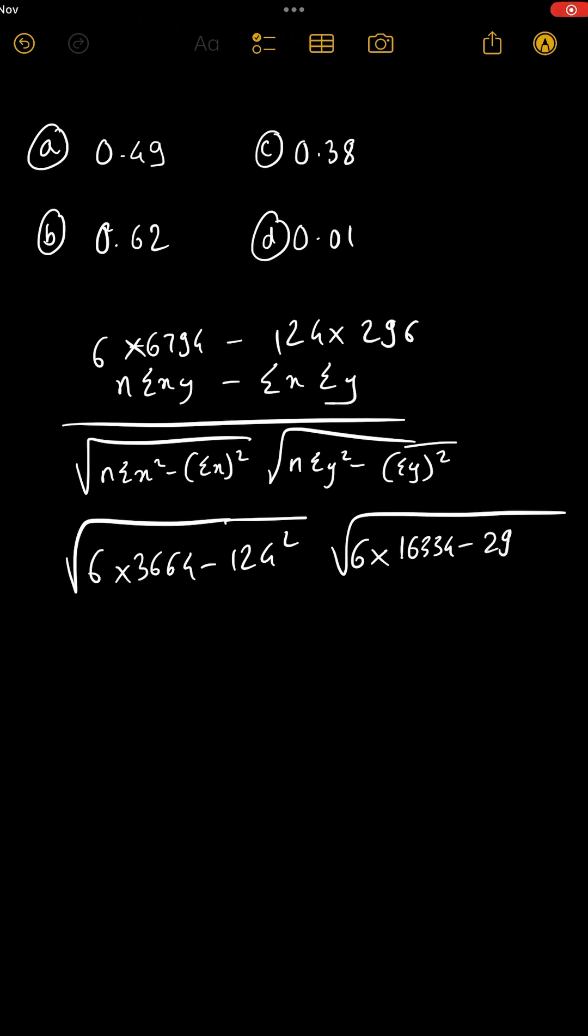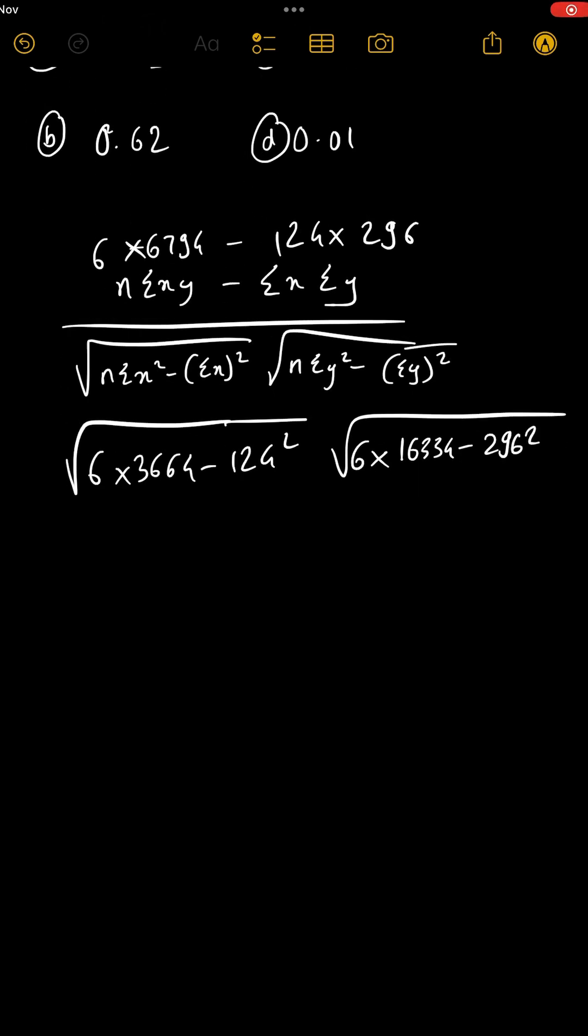Minus summation y bracket square is 296 square. So now we just have to solve this. How do we solve? Numerator, 6 into 6794 m plus because we have to add this, and 124 into 296 m minus because we have to subtract this.